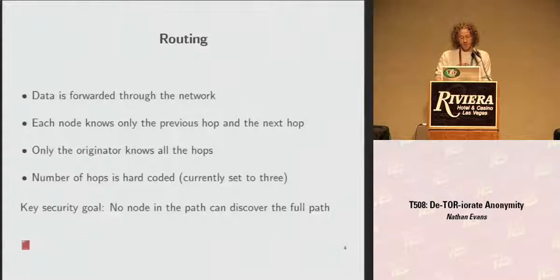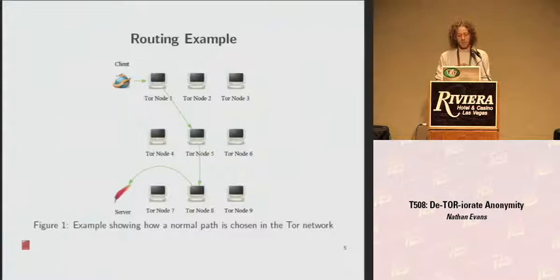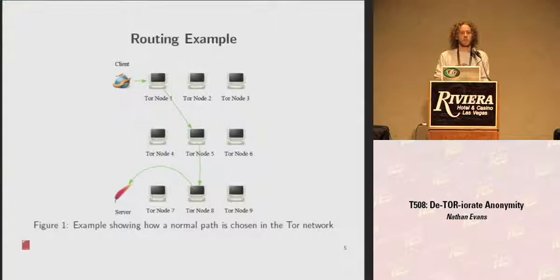So what we're trying to do is discover all of the Tor nodes that a client chooses. In the routing example, the PC-looking things are Tor servers, the client is the Firefox icon, and the Apache feather is the web server. Instead of connecting directly to the server, the client chooses three servers from the Tor network — here Tor nodes 1, 5, and 8 — and all data goes through those nodes, with return traffic following the path in reverse.